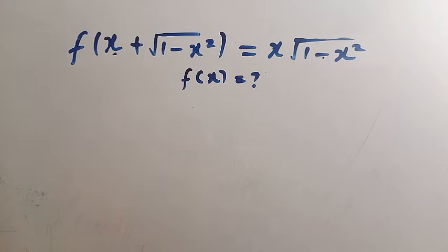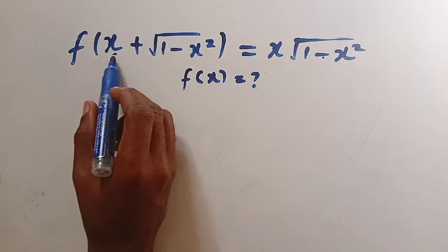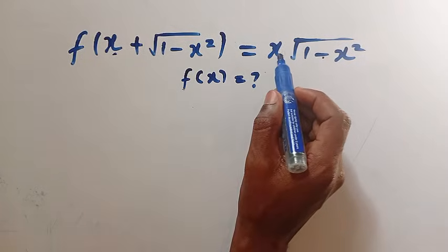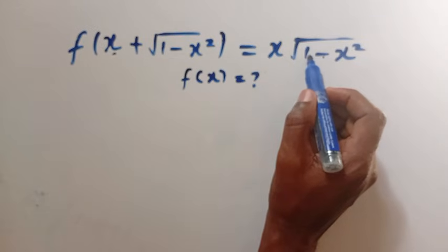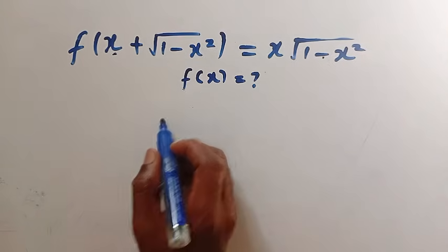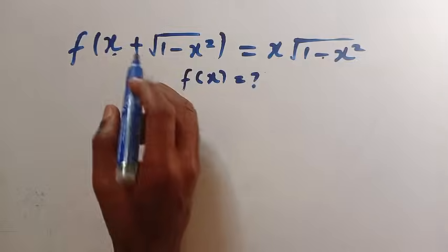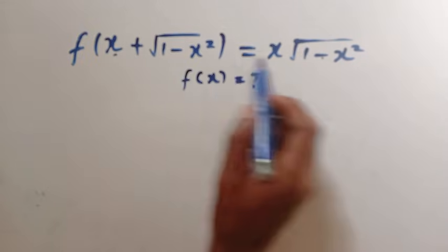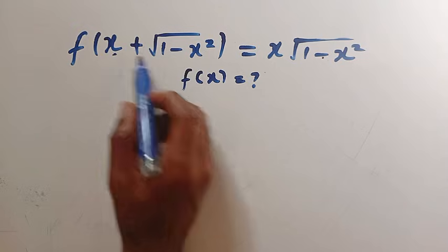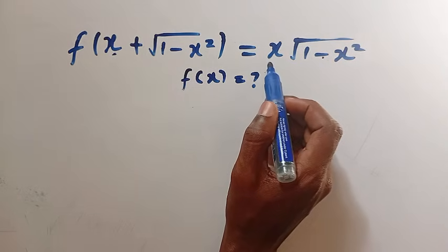Good day viewers, you are welcome. How to solve these nice functional equations? We are given f(x) + √(1−x²) = x·√(1−x²), and we are interested to find f(x). The only difference between the left side and the right side is that here we have addition and on the right side we have multiplication.